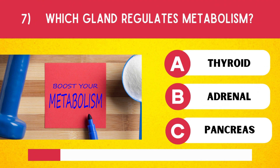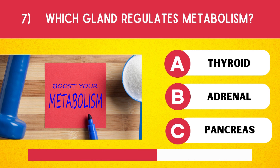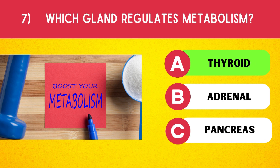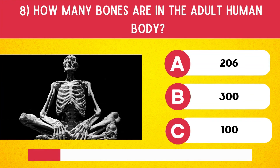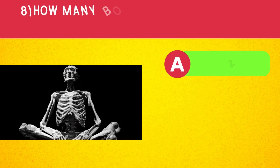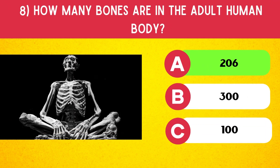Which gland regulates metabolism? Thyroid. How many bones are in the adult human body? 206.